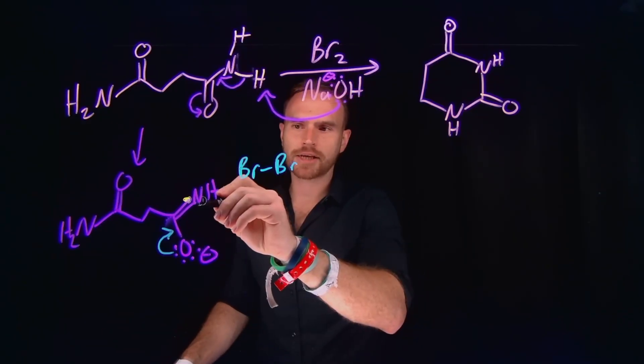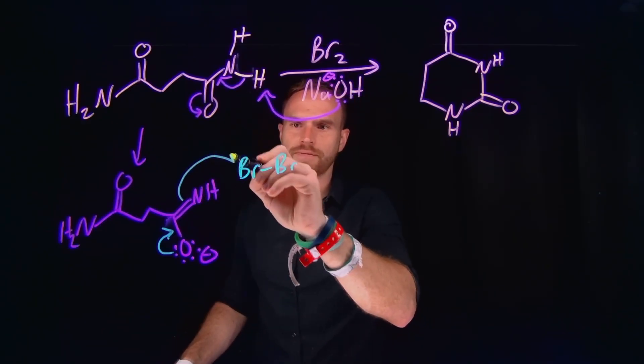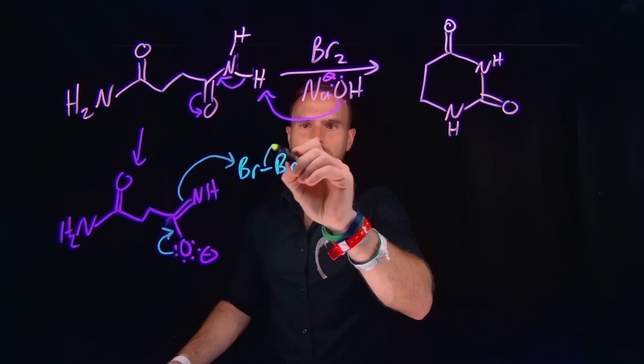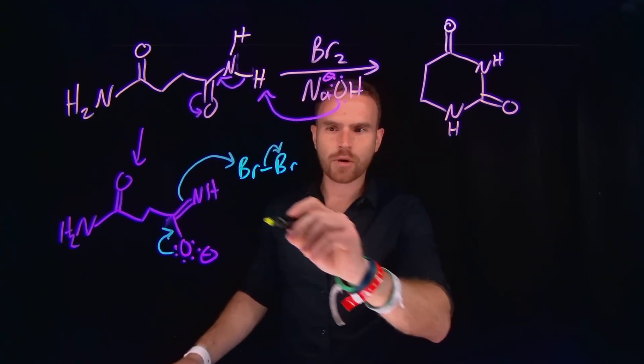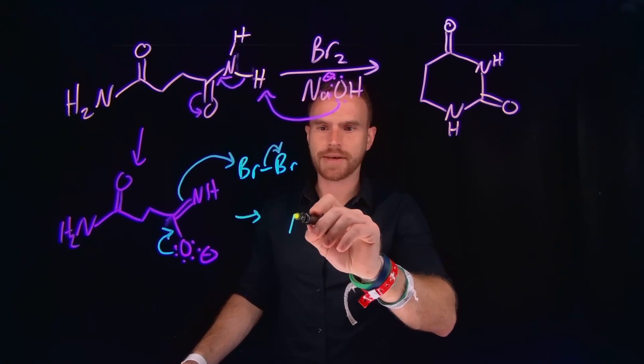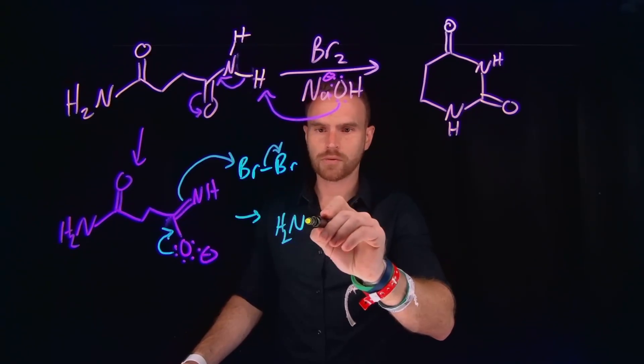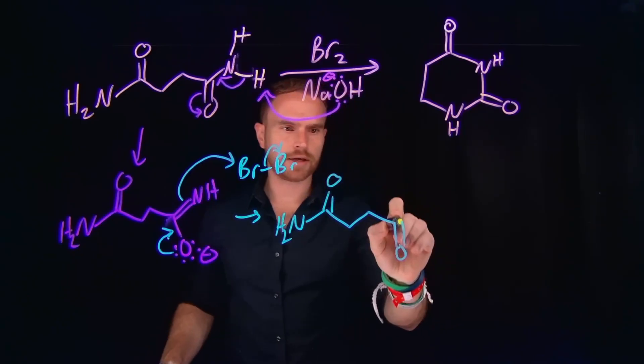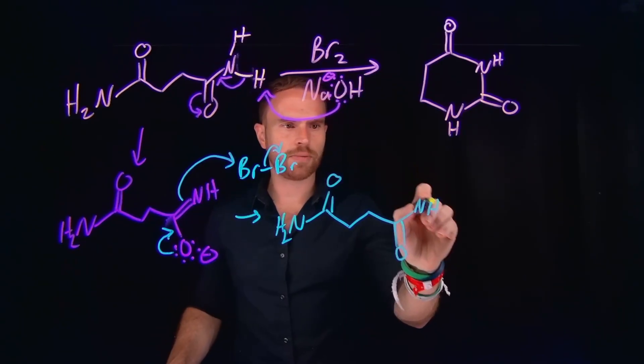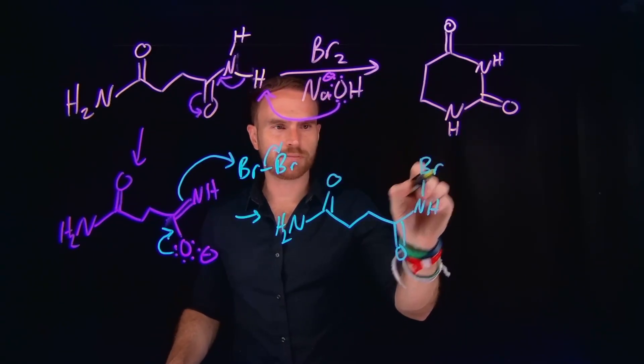And then these pi electrons will actually come and do a nucleophilic attack on bromine to end up generating bromide and kind of doing like an alpha halogenation. Which means now what we've generated is actually going to be a nitrogen to bromine bond, which is a pretty unique bond that you don't encounter very often in organic chemistry.